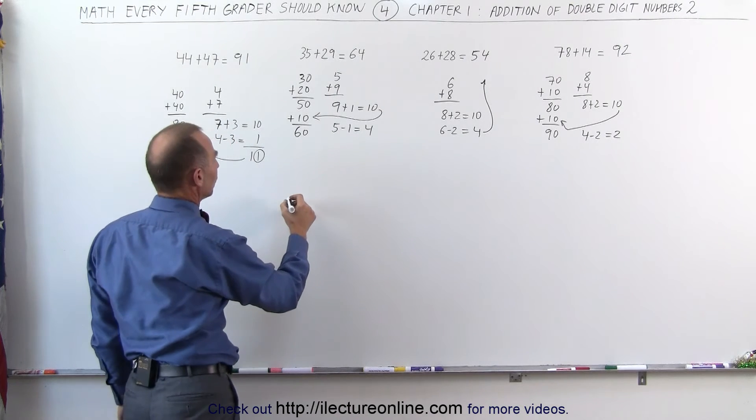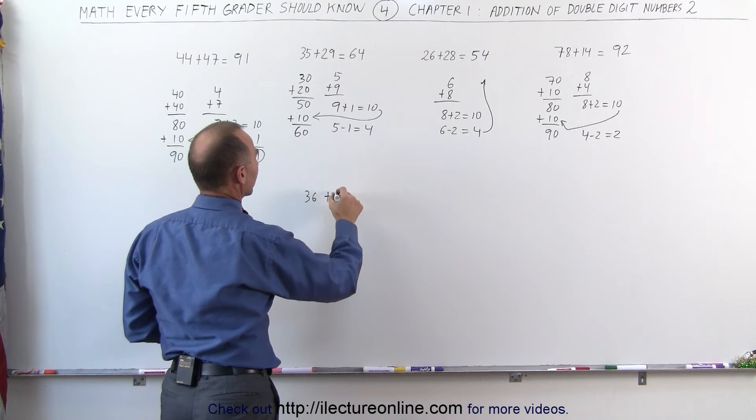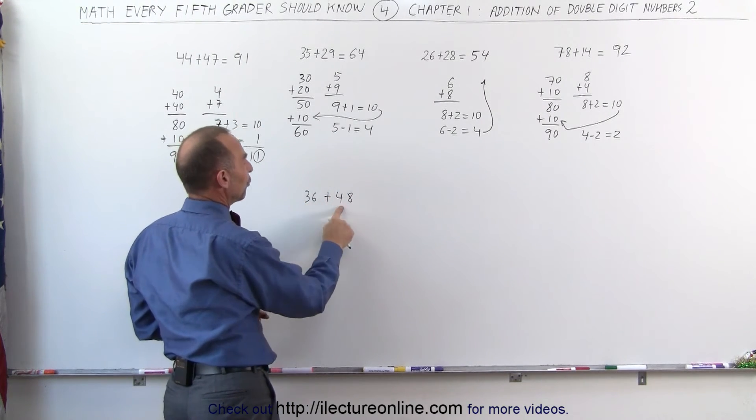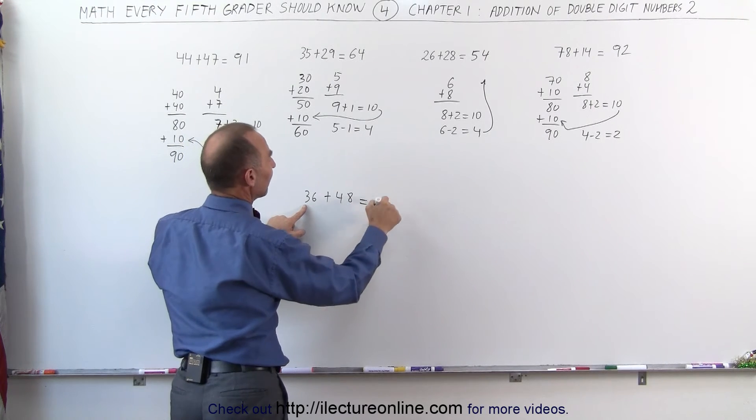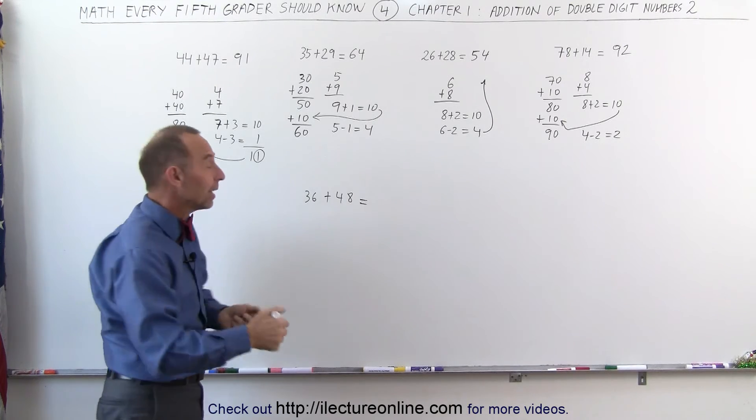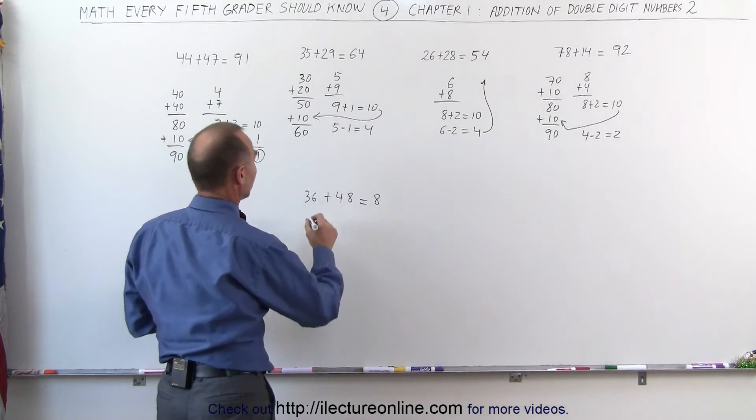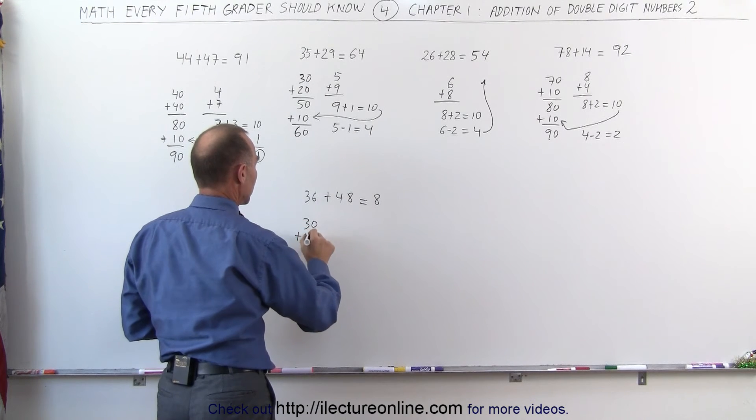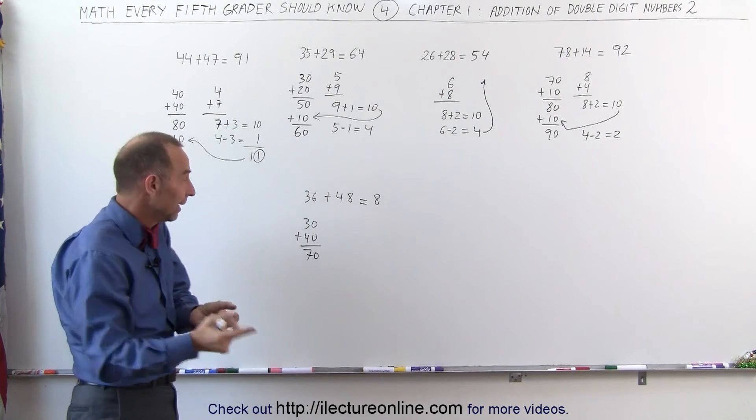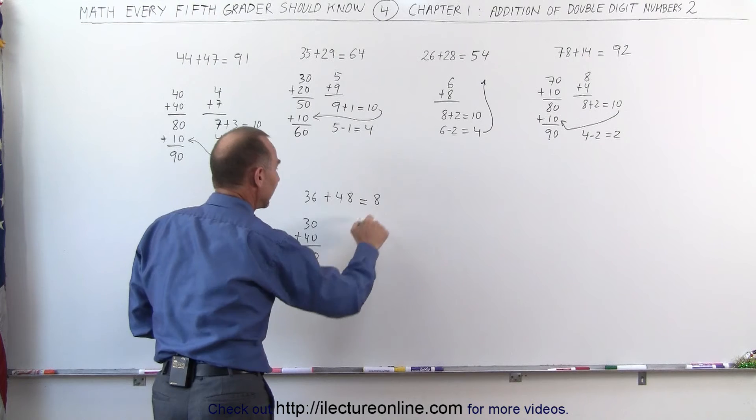Let's try another one. Let's try 36 plus 48. Here you notice that 30 plus 40, 3 plus 4 would give me 70. However, since 6 plus 8 is more than 10, we need to add another 10 to that. That becomes 80. What did we just do? We took the 30 plus the 40, that gave me 70. But realizing that 6 plus 8 is going to be more than 10, I take another 10 and add that to the 70 to give me 80.